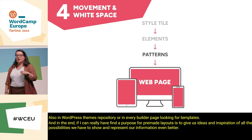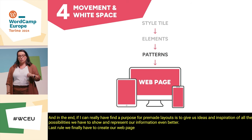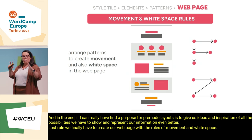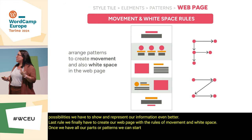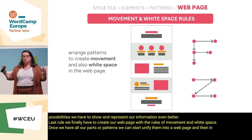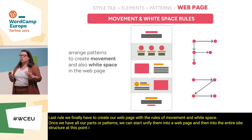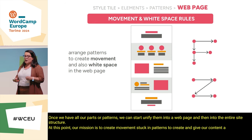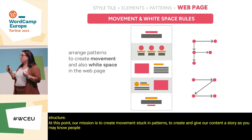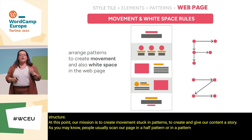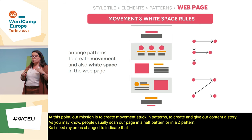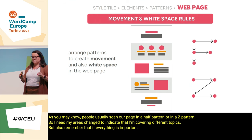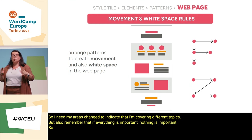The last rule: we finally have to create our web page with the rules of movement and white space. Once we have all our parts or patterns, we can start unifying them into a web page and then into the entire site structure. Our mission is to create movement — linking patterns to give our content a story. As you may know, people usually scan our page in an F pattern or in a Z pattern. So I need my areas to change to indicate I'm covering different topics. And remember: if everything is important, nothing is important — so create some space to focus attention on specific elements.